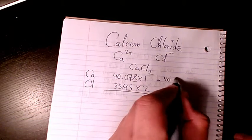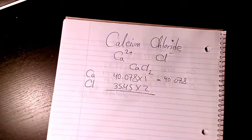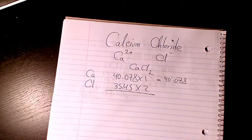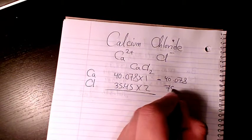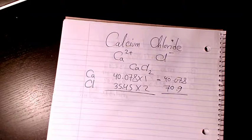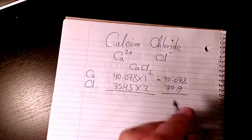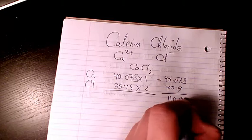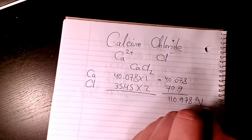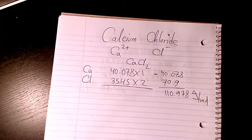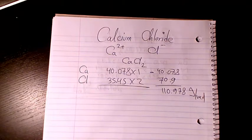40.078, and here 35.45 times 2 is 70.9 plus 40.078. That makes it 110.978 grams per mole. So that's the molar mass of calcium chloride. Please leave me a comment if you have any questions and I'll get back to you.